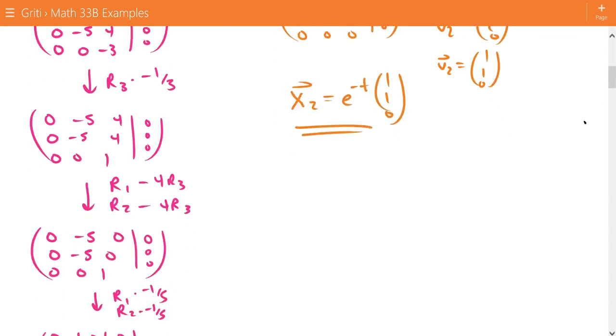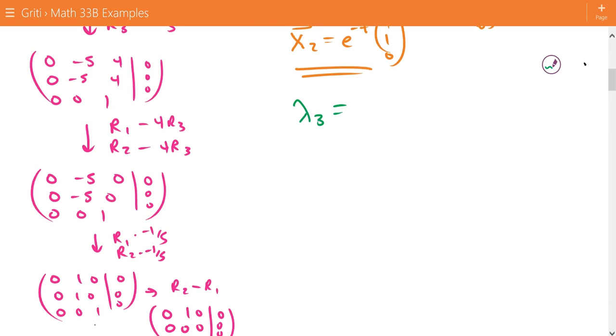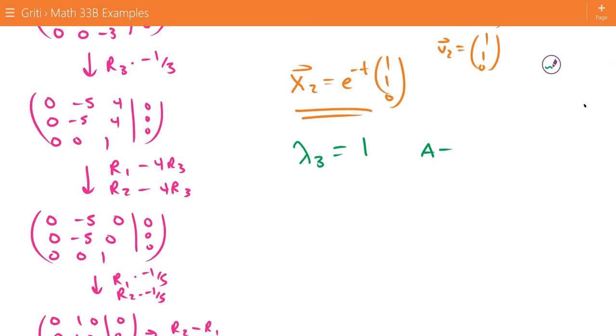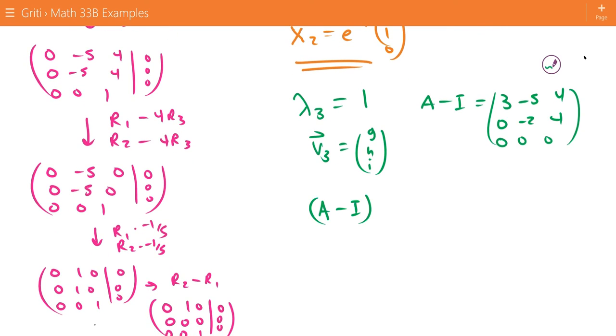Now if we look at our third eigenvalue, lambda 3, that's going to equal 1. So we're going to be considering A minus I. A minus I is going to be 3, negative 5, 4, 0, negative 2, 4, and 0, 0, 0. So we're looking for our V3, which is equal to G, H, I,